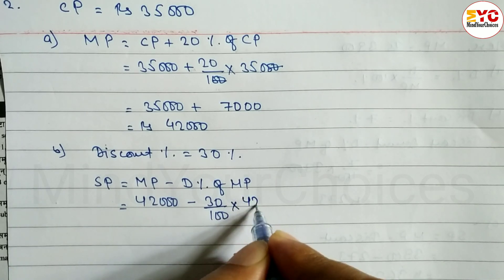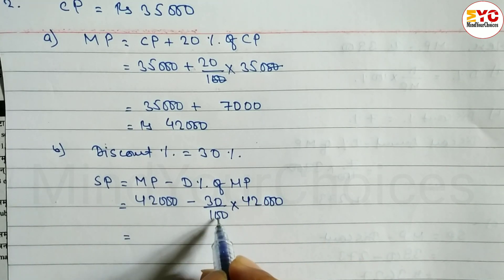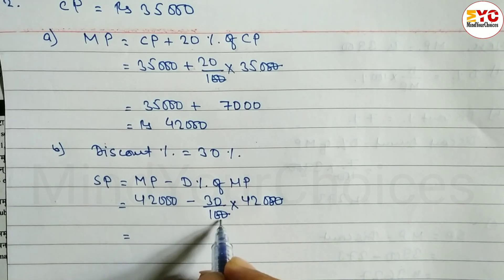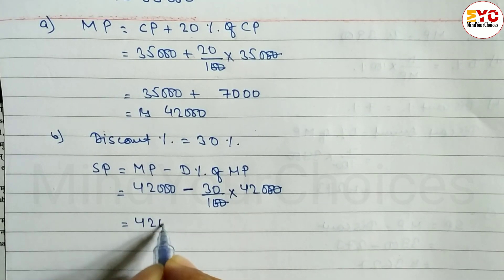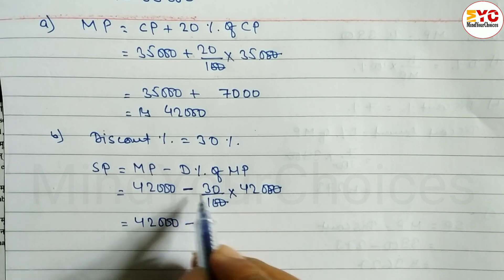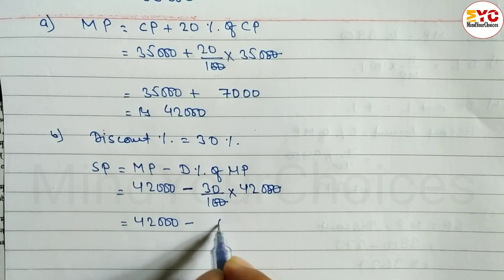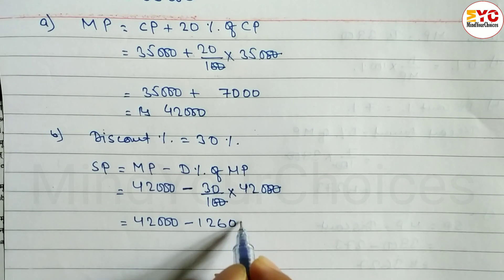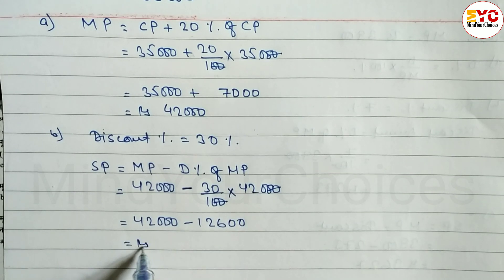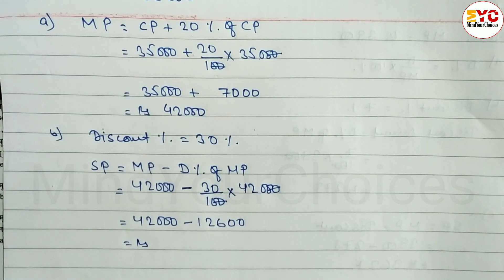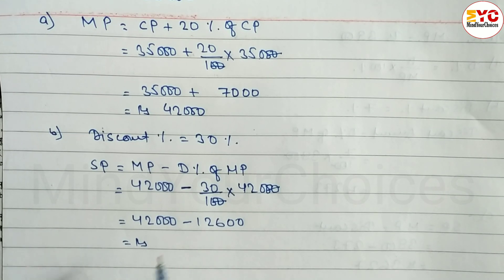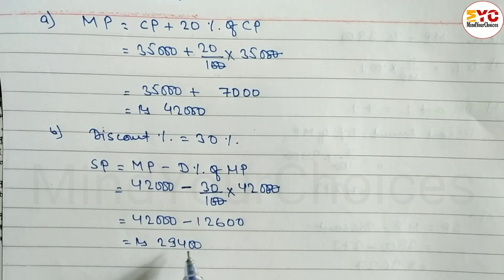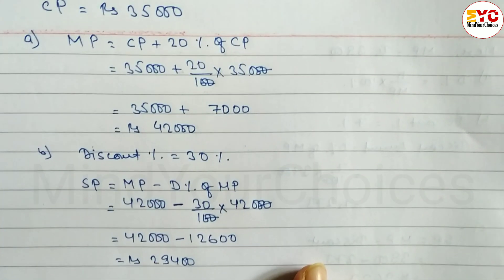SP = 42,000 minus (30/100) × 42,000. The 30 and 100 cancel partially; multiply to get 12,600. So SP = 42,000 minus 12,600. Subtracting: 42,000 − 12,600 = 29,400. So the selling price is 29,400.